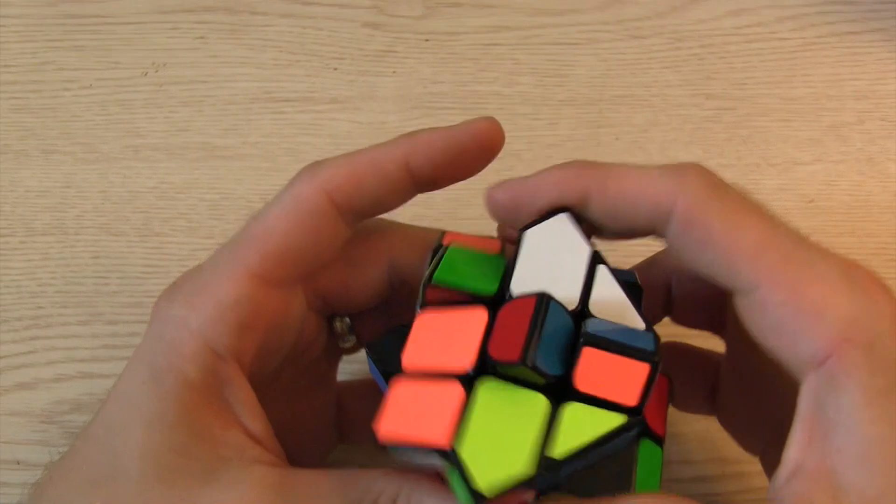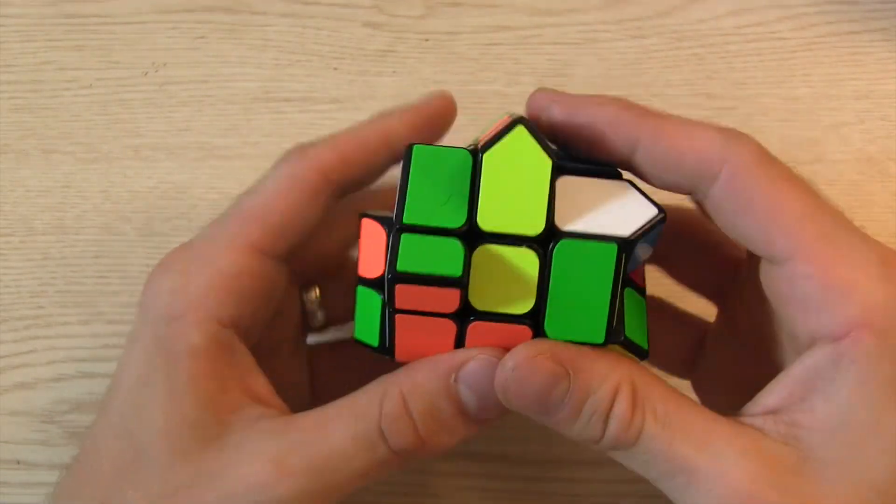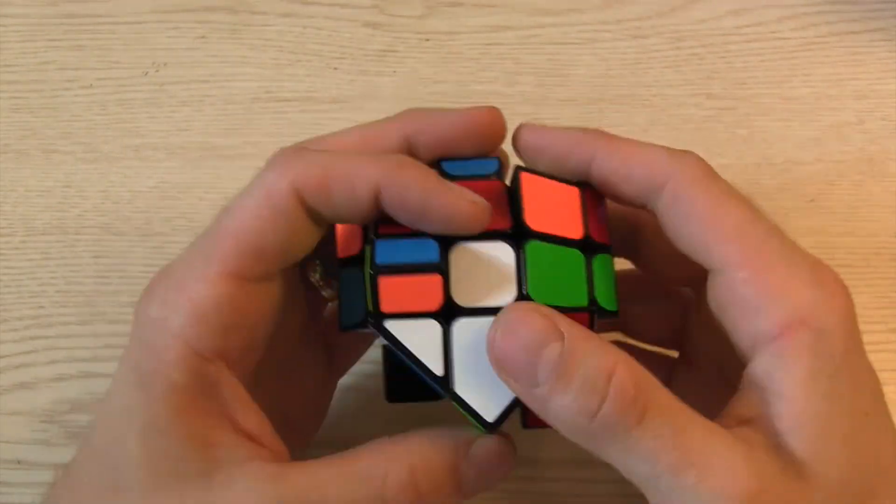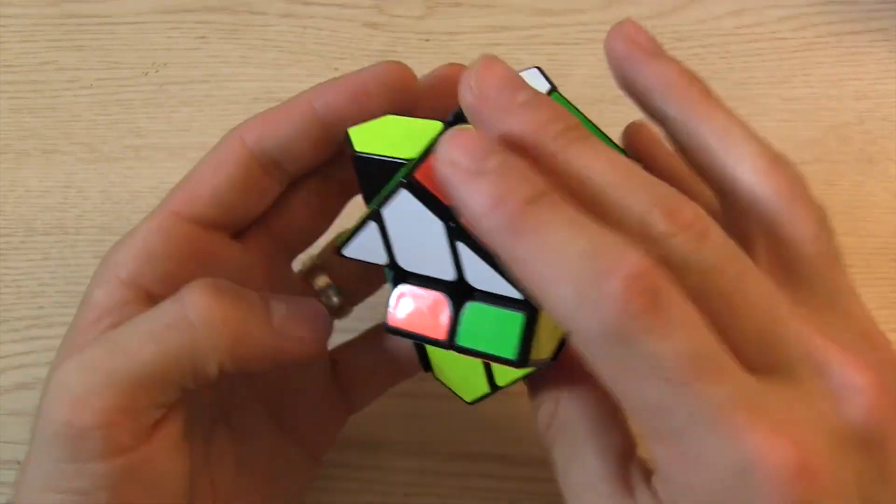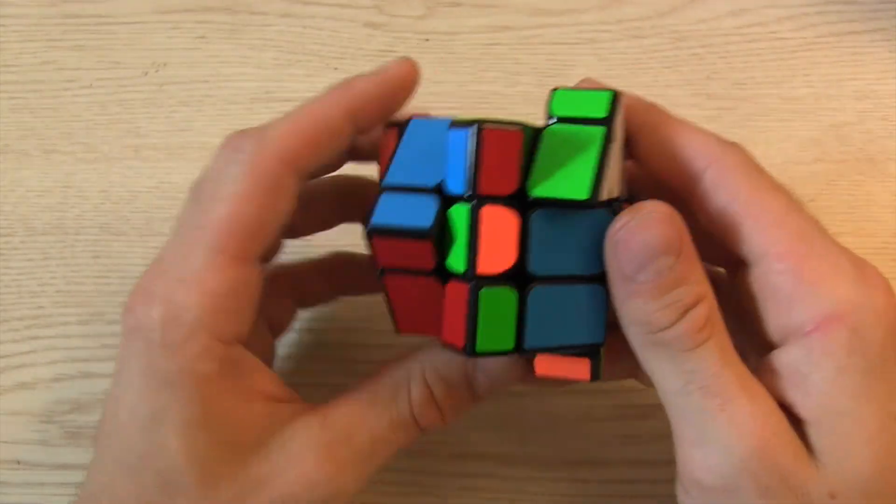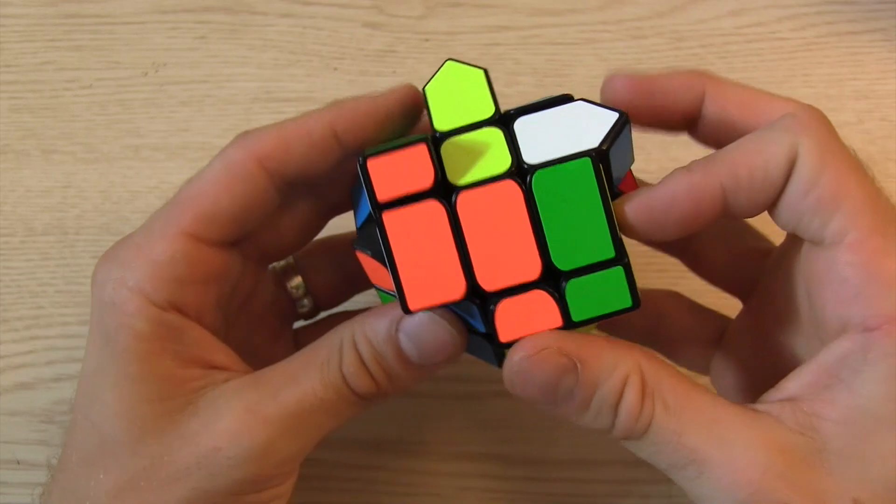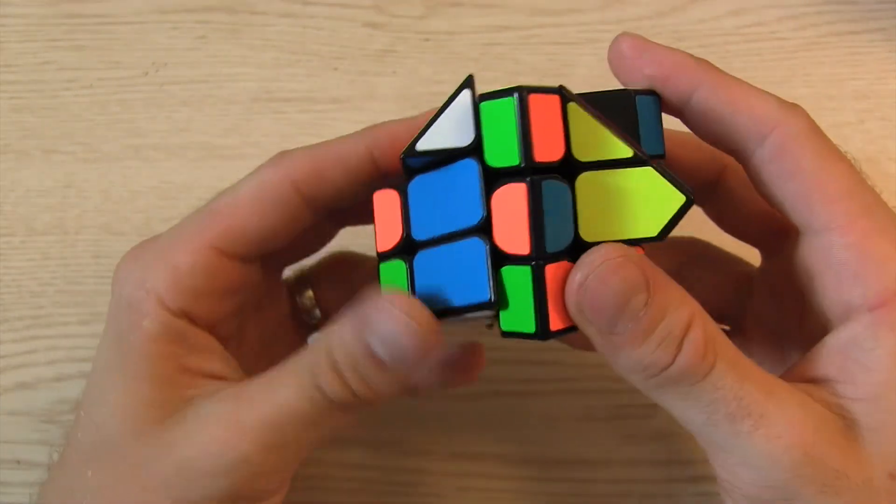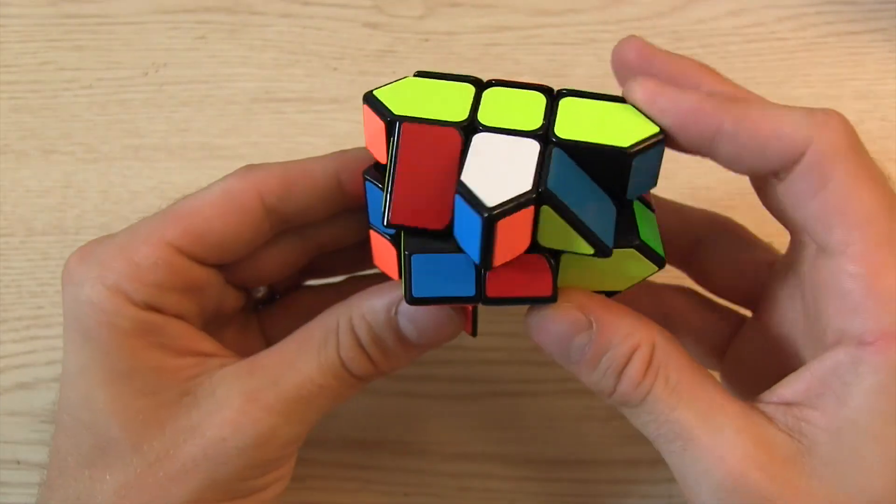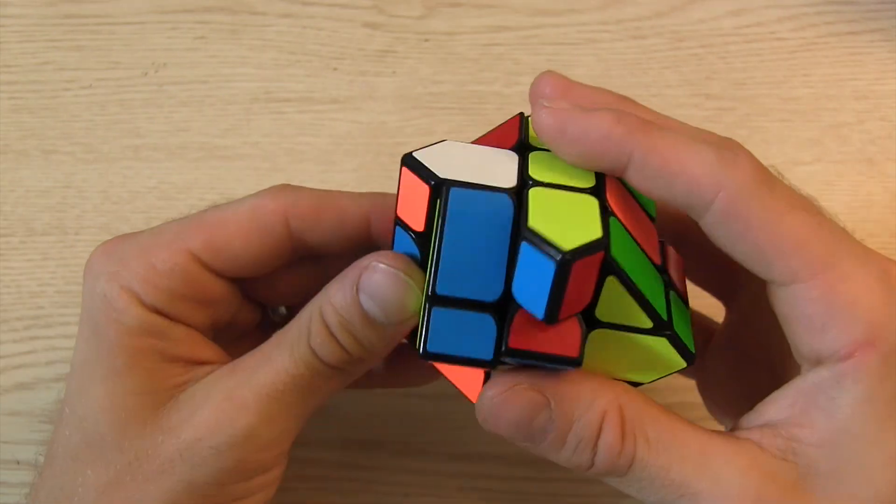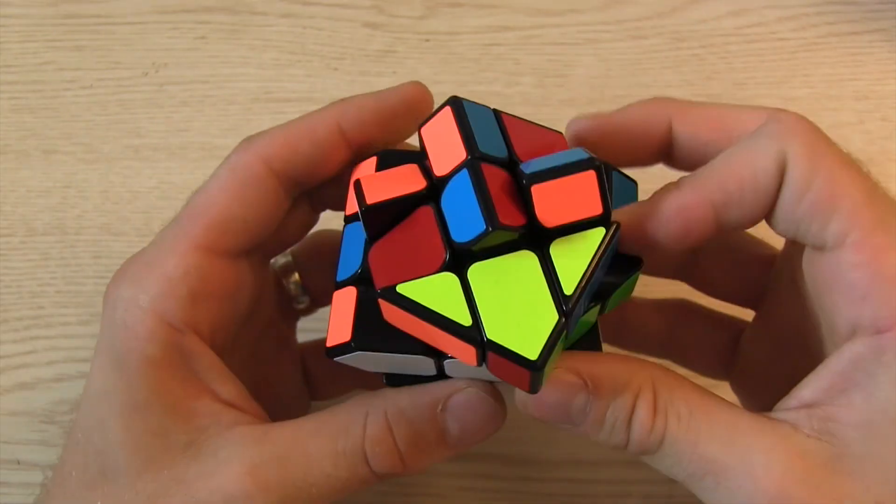So what I'm going to do is just start on the white side and make a plus sign. So here's one, I'll do the next one, I can see red and then green, so this has to go right here, and then that's going to be orange, like that.